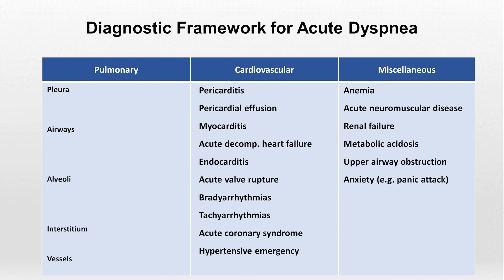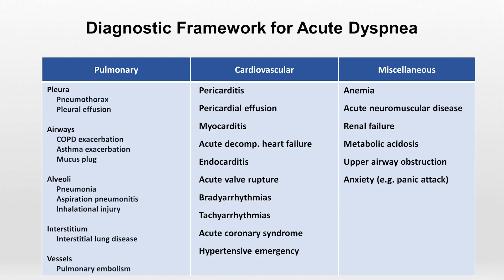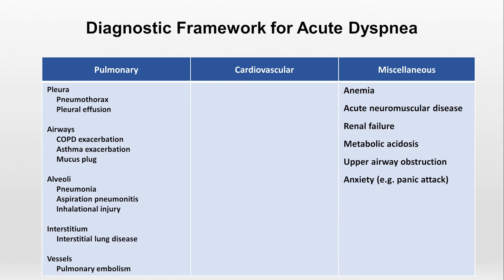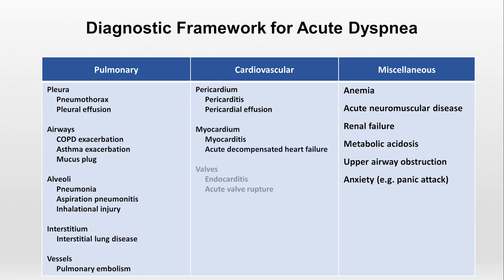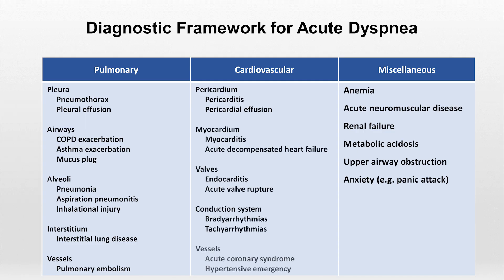So let's reorganize a bit further and replace each pulmonary etiology into one of those subcategories. What about the cardiovascular system? There are some analogous components: you have the pericardium, the myocardium, the valves, the conduction system, and once again the vessels.